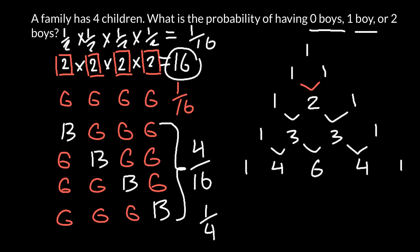The next row also starts with one and ends with one, and we fill in the gaps: four, six, four. Now I need to give names to each row. The top is called row zero. Then first, second, third, and fourth.